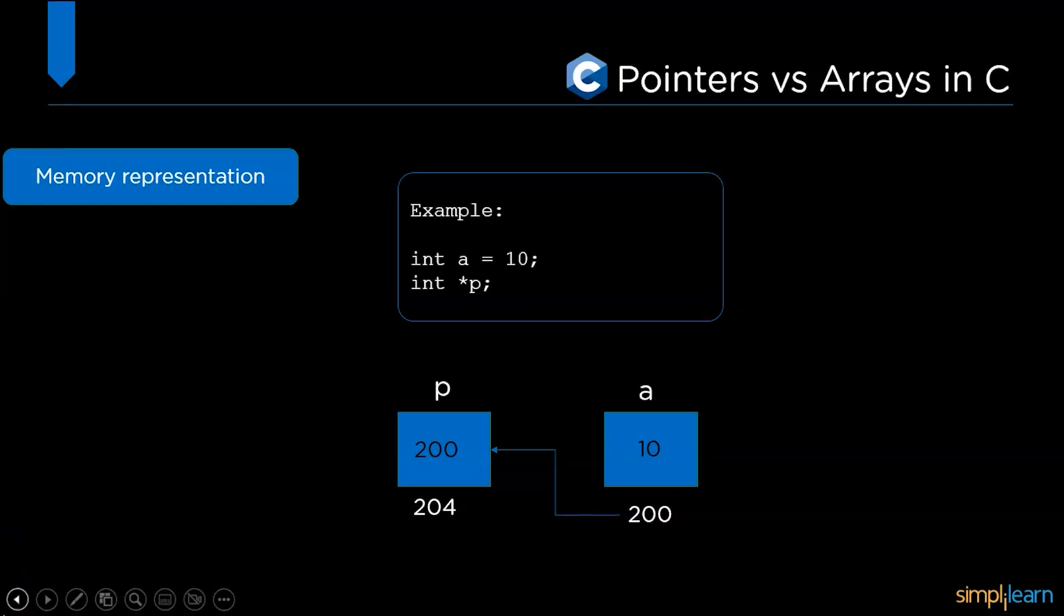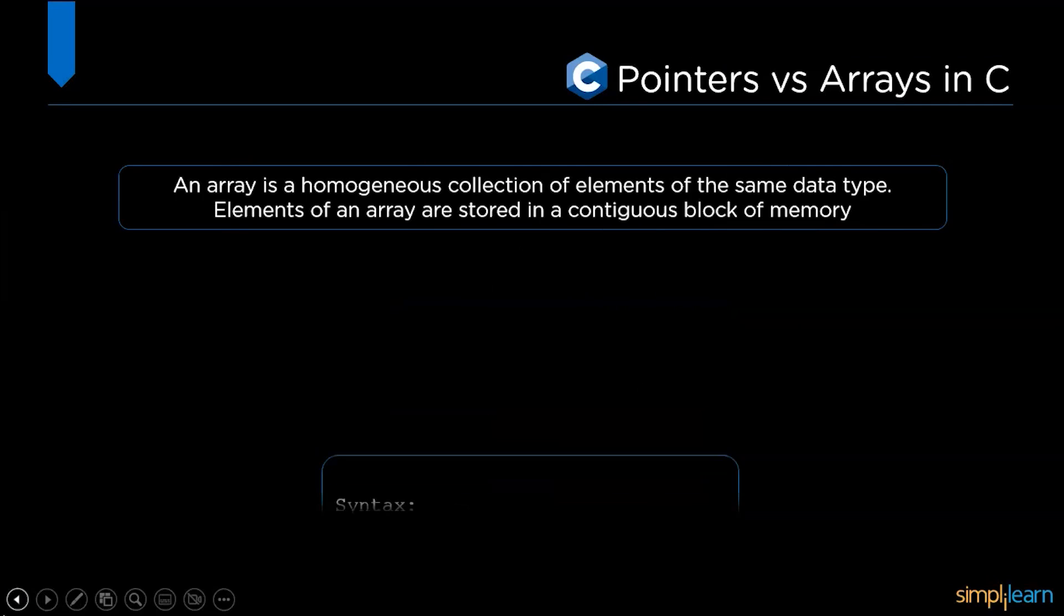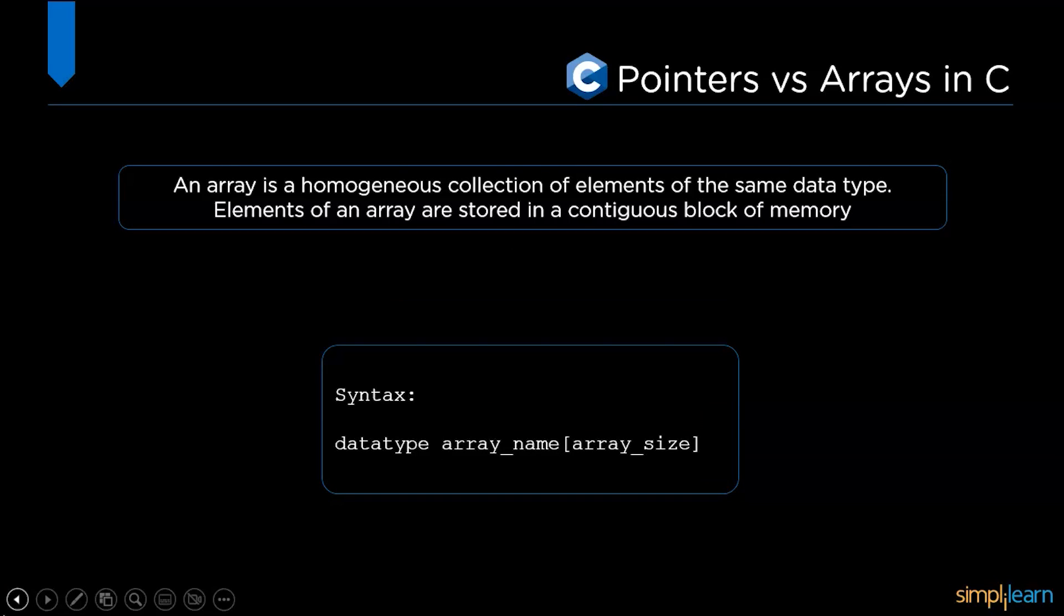Now we got some basic idea of how to use pointers in C. So moving ahead, let's understand what arrays in C are. An array is a homogeneous collection of elements of the same data type. Similar types of elements are stored under one name called an array name, and the array of elements are stored in a consecutive block of memory.